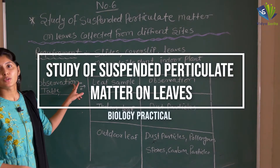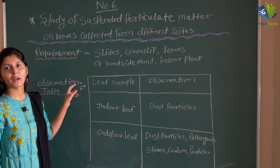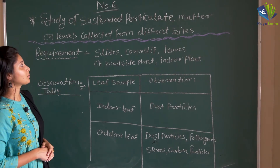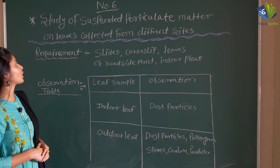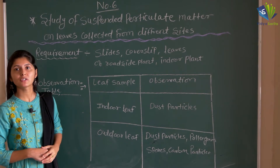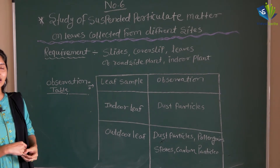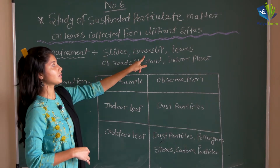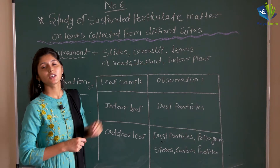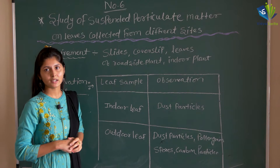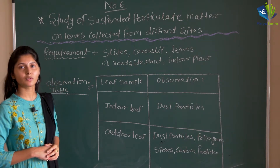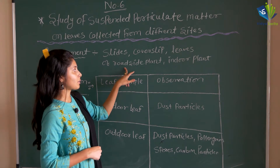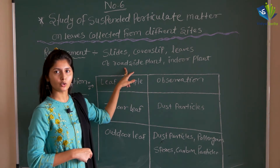Today we are going to conduct practical number 6, that is the study of suspended particulate matter on leaves collected from different sites. The requirements are slides, cover slip, and leaves from two sites — one is the indoor plant and another one is the outdoor plant, also called a roadside plant.